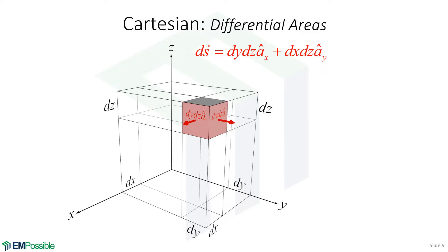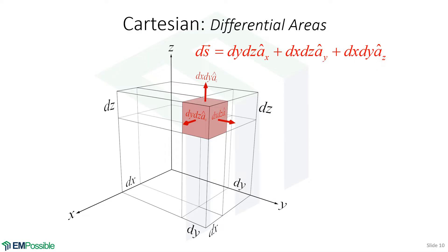We now move on to the next face of our differential volume. The area is dx times dz, and it's in a direction parallel to the y-axis, so its direction is unit vector ay. The last differential surface is on the top surface of the differential volume. The area is dx times dy, and the direction perpendicular to that is in the z direction. So that differential surface is dx dy times unit vector az. In one picture, we have all three of our differential areas defined around that differential volume.